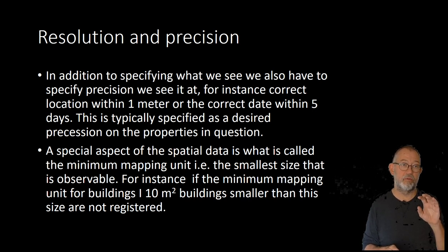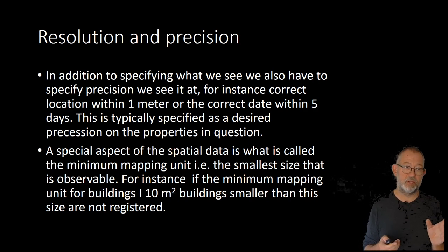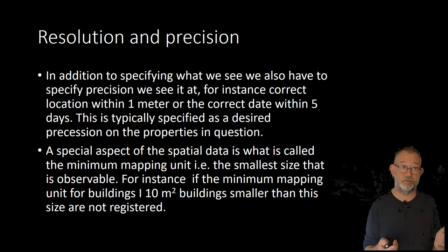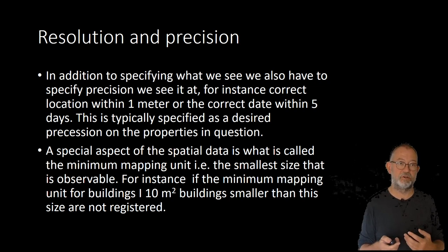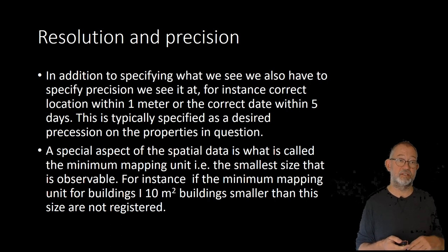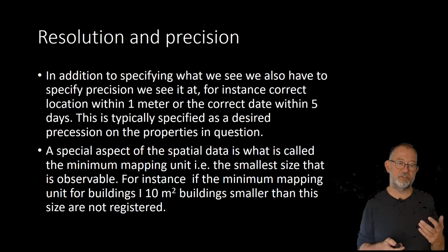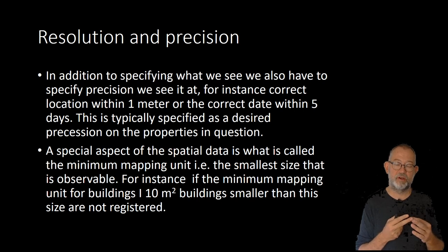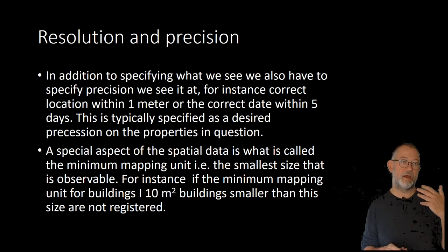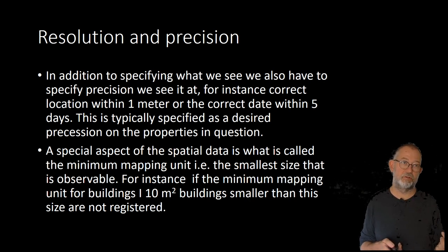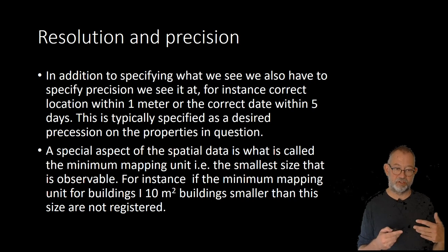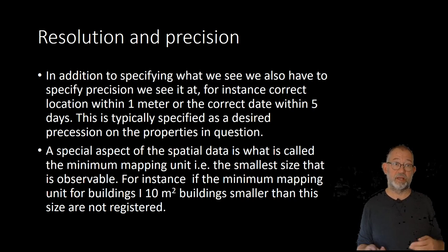So we say: how small a building do we register? This is what we call a minimum mapping unit. Buildings less than ten square meters are not registered — that's the example in the Danish definition of a building. So, in addition to specifying which entities and which properties they have, we also specify the resolution and the position of our properties. Resolution is specific for dimensions of time and space, but position will apply to basically any of our attributes — we will have to specify a desired position.